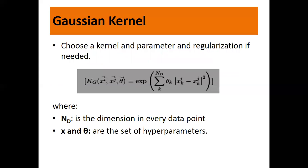We use the Gaussian kernel. Choose a kernel, parameters, and regularization if needed. Here you can see the Gaussian kernel, where nd is the dimension in every data point, and x and theta are the set of hyperparameters. We already spoke about hyperparameters in neural networks where they are used to fine-tune the output so the error is reduced.